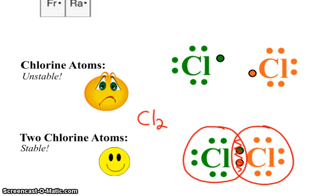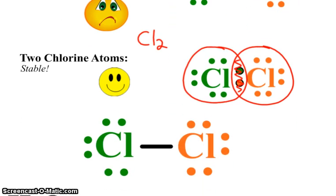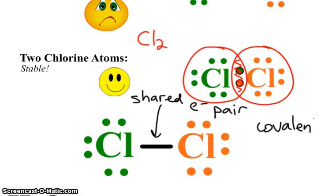And so right here is the shared pair, our covalent bond. Now when we draw these, we typically use a dash or a line to represent the shared pair. So right there is our shared pair of electrons, our shared electron pair, which of course,